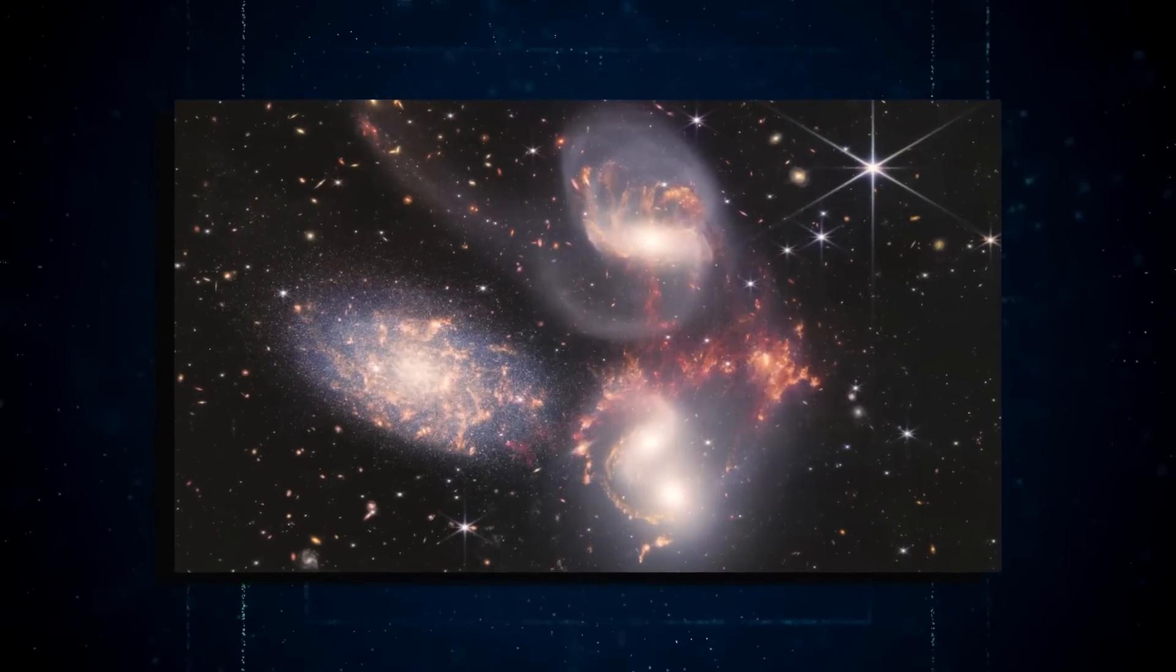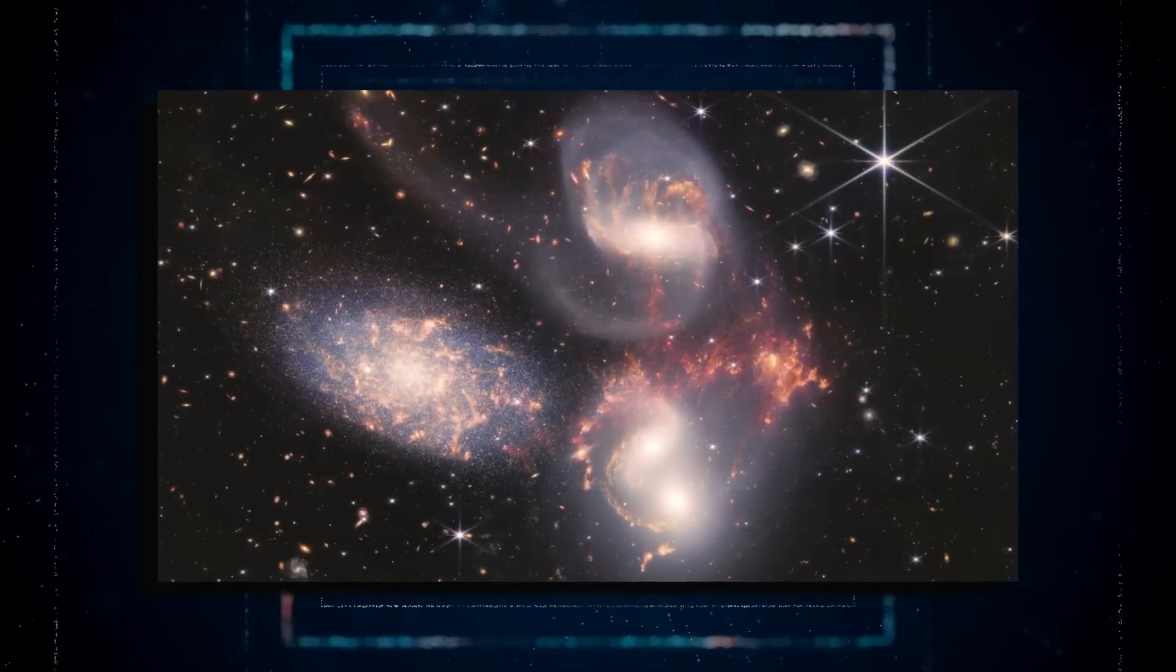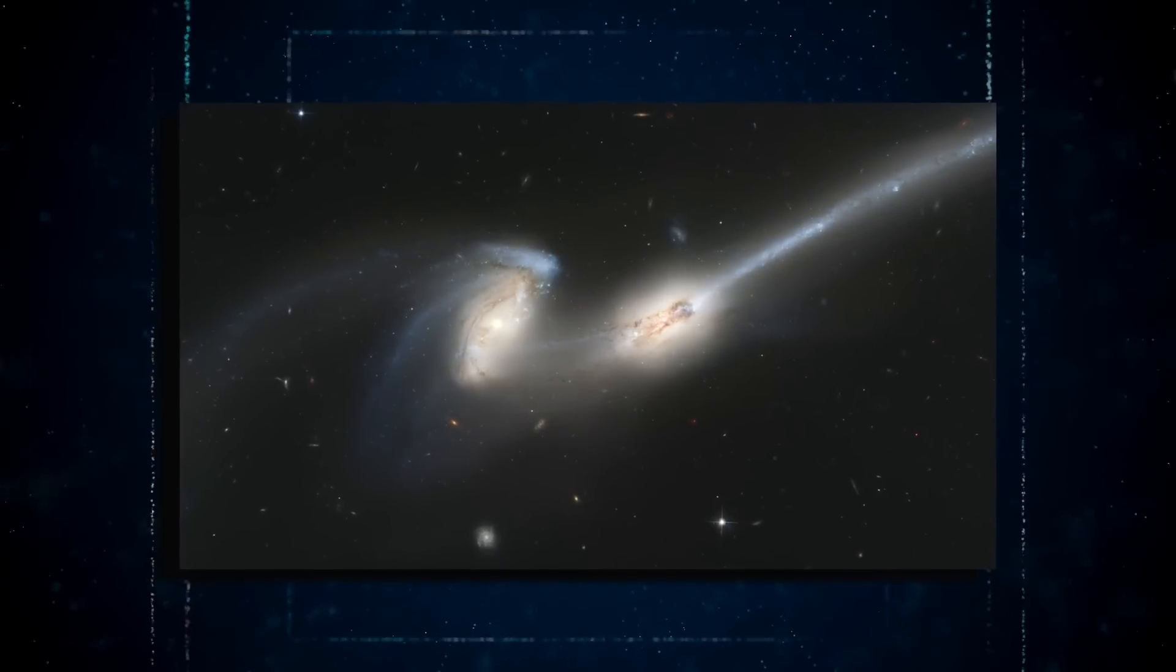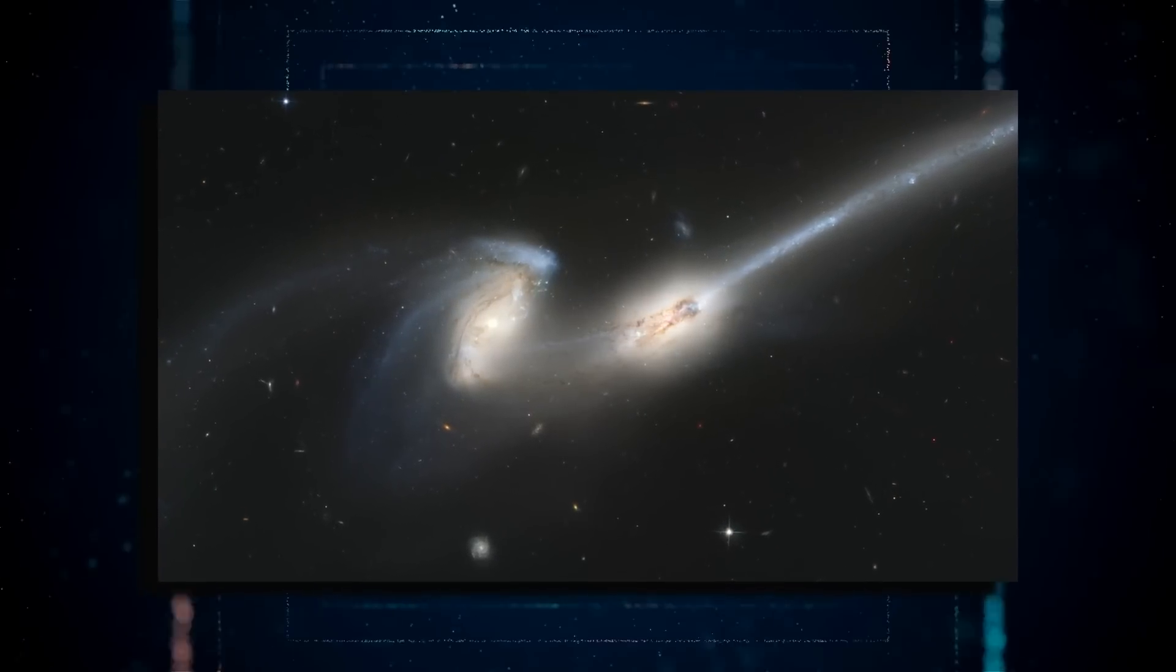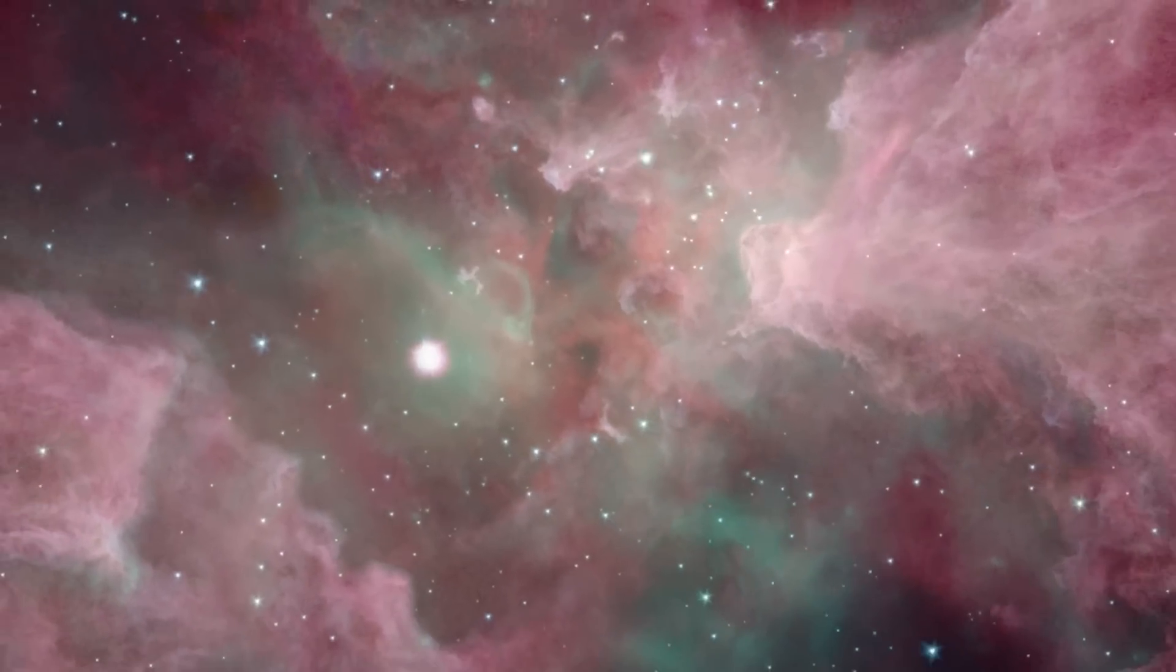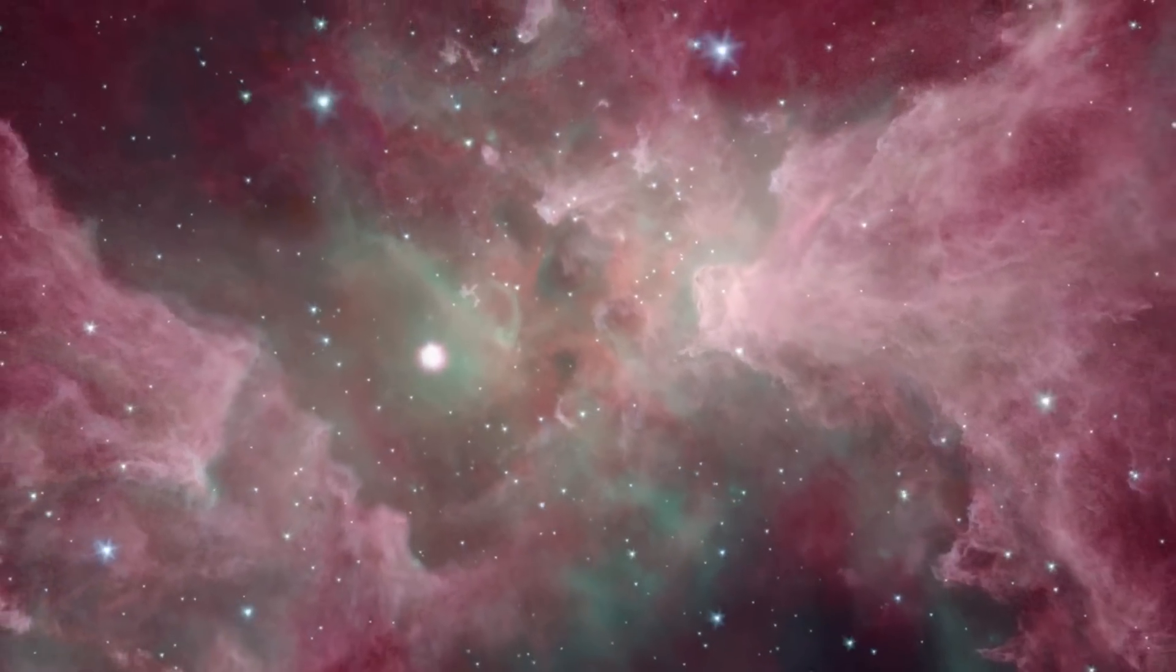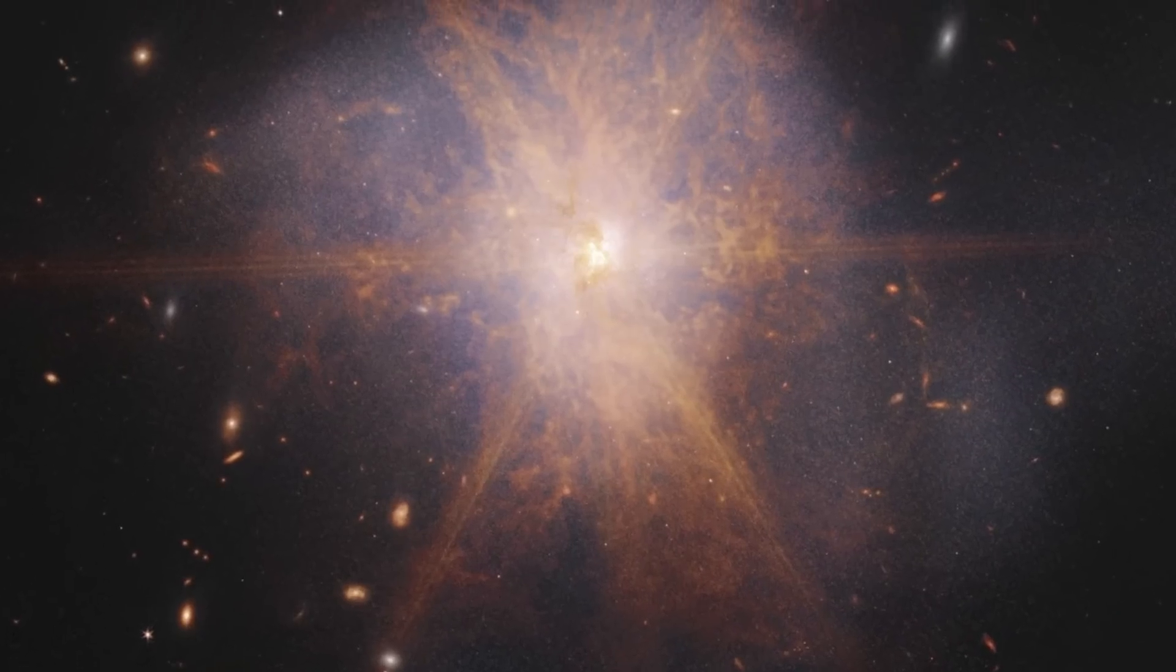Webb's image also shows faint tidal tails extending from the mergers' outskirts, indicating the gravitational attraction between the two galaxies. Finally, reddish-orange streams and filaments represent organic materials scattered across ARP 220.